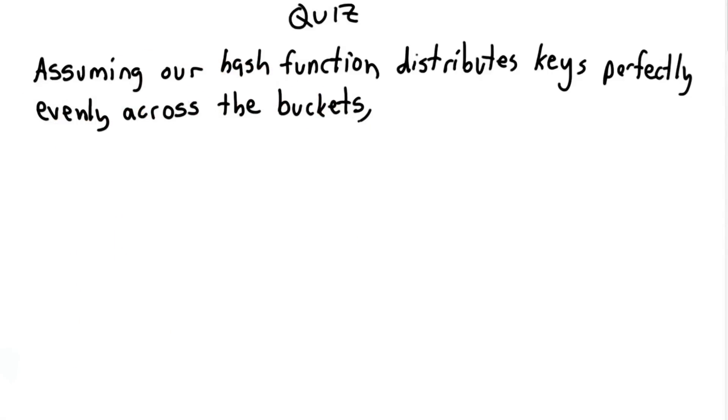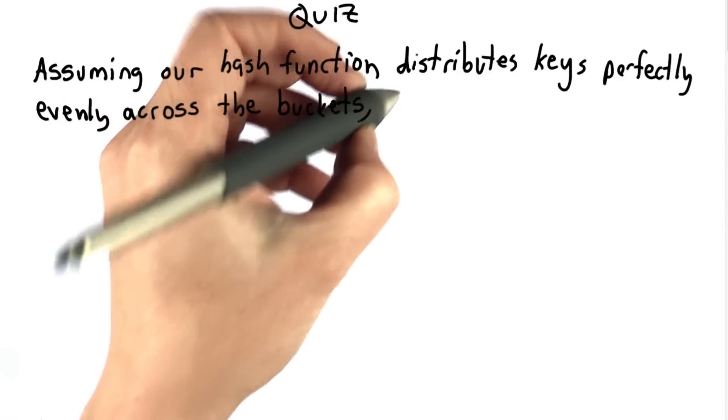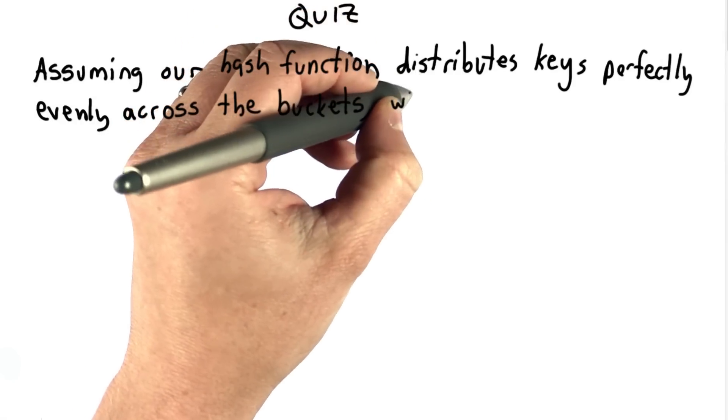So let's assume for now that we have a perfect hash function that distributes keys evenly across all the buckets.